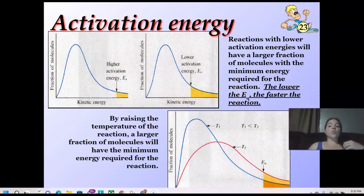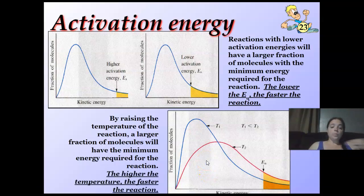Reaction rates with lower activation energies will have a larger fraction of molecules with the minimum energy required. The lower the activation energy, the faster the reaction. Here's the lower, here's the higher. By raising the temperature of a reaction, so instead of having here, I raise the temperature, I lower the activation energy, so more molecules will make it over that hump at a faster rate. The higher the temperature, faster the reaction.